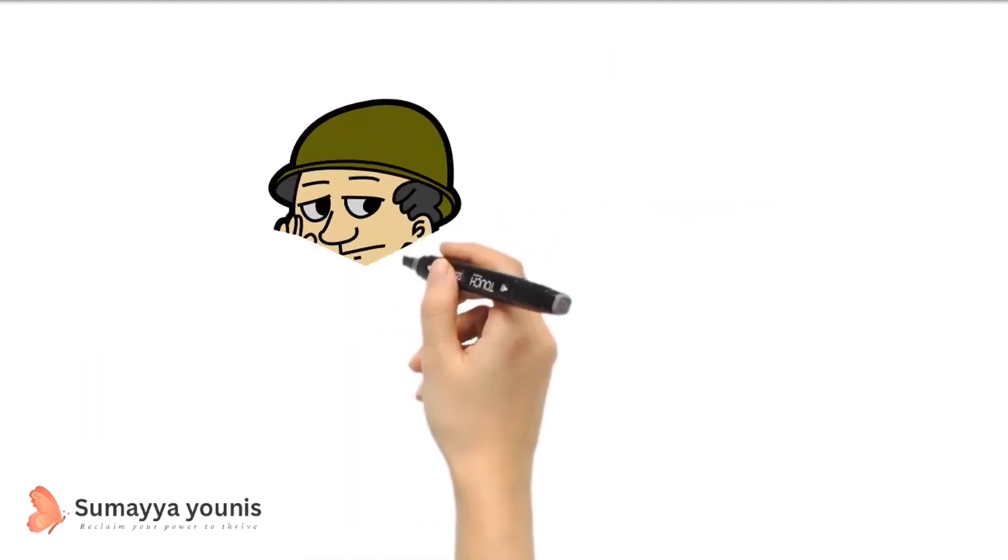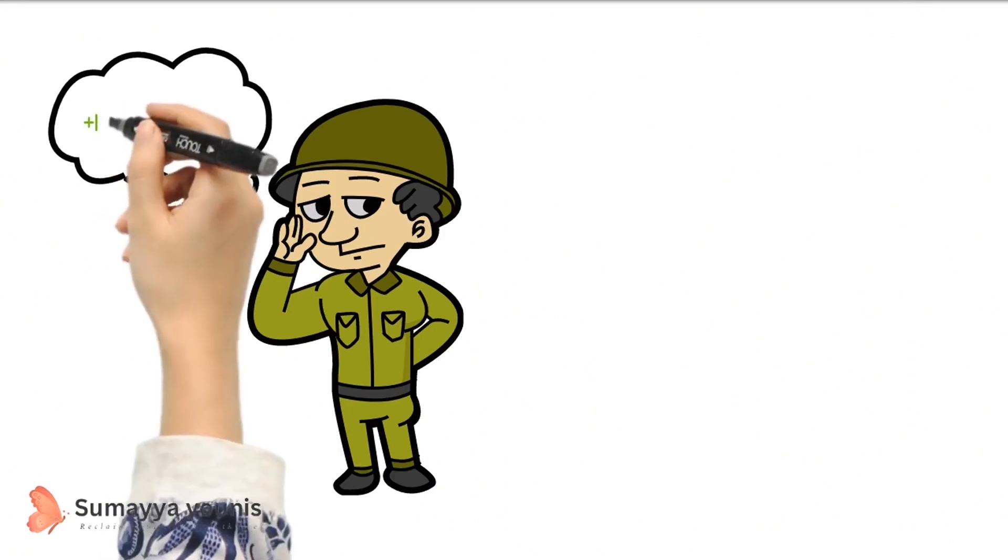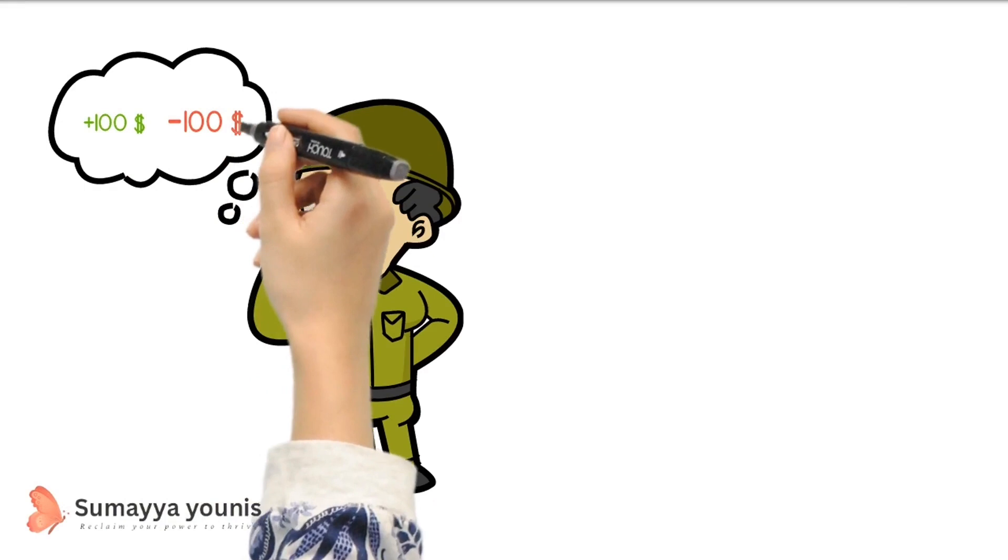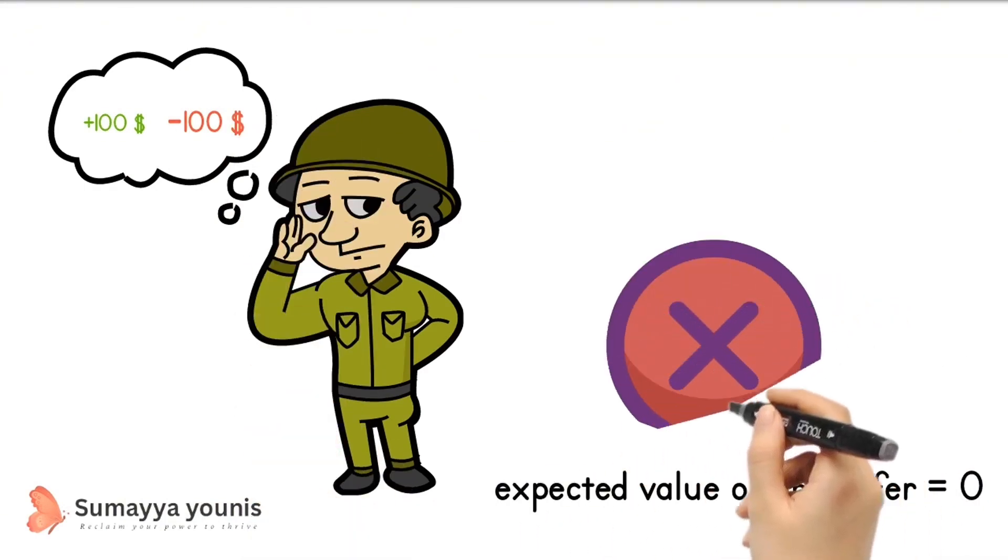Here's an example of how prospect theory works. Imagine that you're offered a 50% chance of winning $100 and a 50% chance of losing $100. What would you do? Most people would refuse this offer even though the expected value is zero. This is because we weigh losses more heavily than gains. We're more afraid of losing $100 than we're excited about the possibility of winning $100.